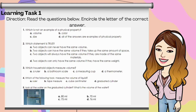Number four: which of the following tools measures the volume of liquids? A, ruler? B, tape measure? C, cubic centimeter? Or D, graduated cylinder? Number five: look at the water on the graduated cylinder. What is the volume of the water? Is it A, 80 ml? B, 70 ml? C, 75 ml? Or D, 76 ml?